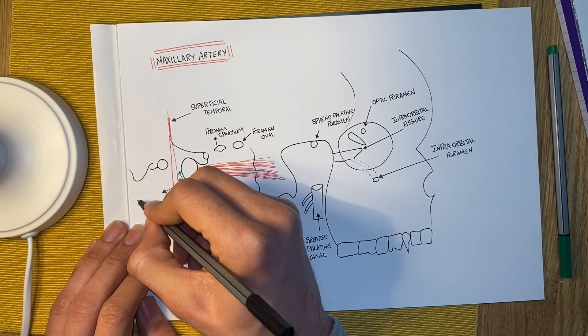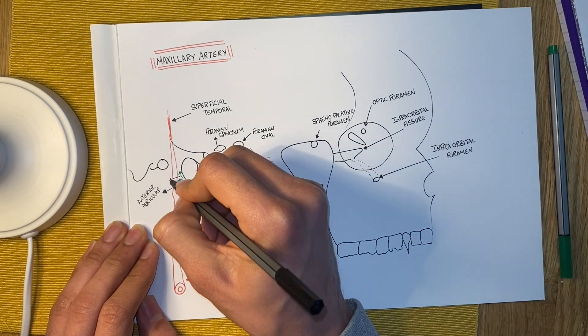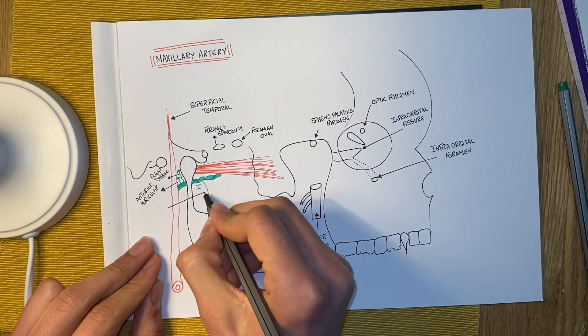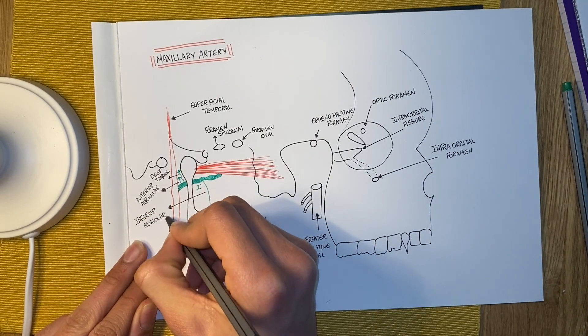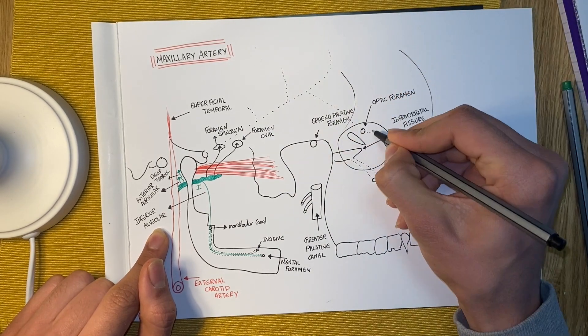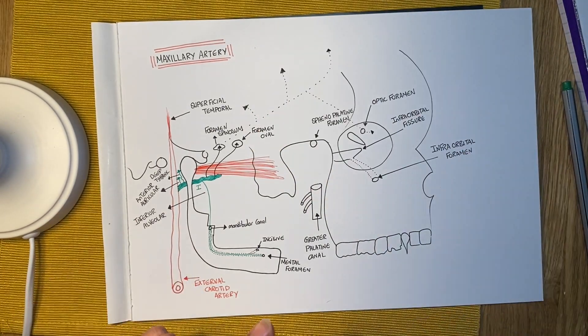The maxillary artery first part is called mandibular and has the anterior auricular, deep tympanic, inferior alveolar, the middle meningeal, and accessory meningeal branches. So five in total.